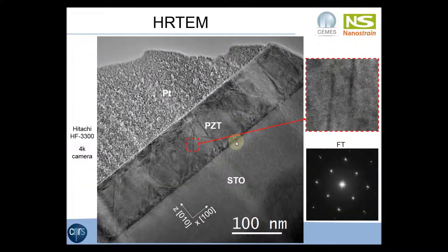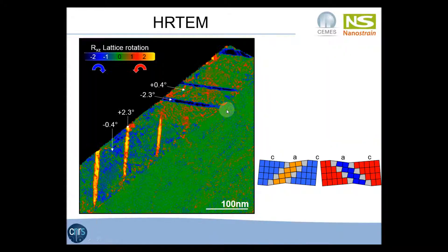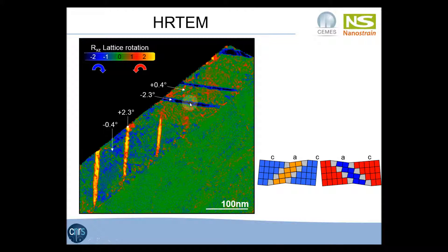This is another high-resolution image with a large field of view — thanks to a 4K camera, we can achieve a field of view of about 400 nanometers while still having enough pixels to sample the largest lattice planes. Several A domains with two different inclinations are visible: on the left part of the image the A domains are inclined to the right, and on the right part they are inclined to the left. This is a map of the rotation calculated by geometrical phase analysis, where anticlockwise rotation is positive and corresponds to red and yellow colors. On the left part, the A domains are rotated anticlockwise, and on the right part they are rotated clockwise.